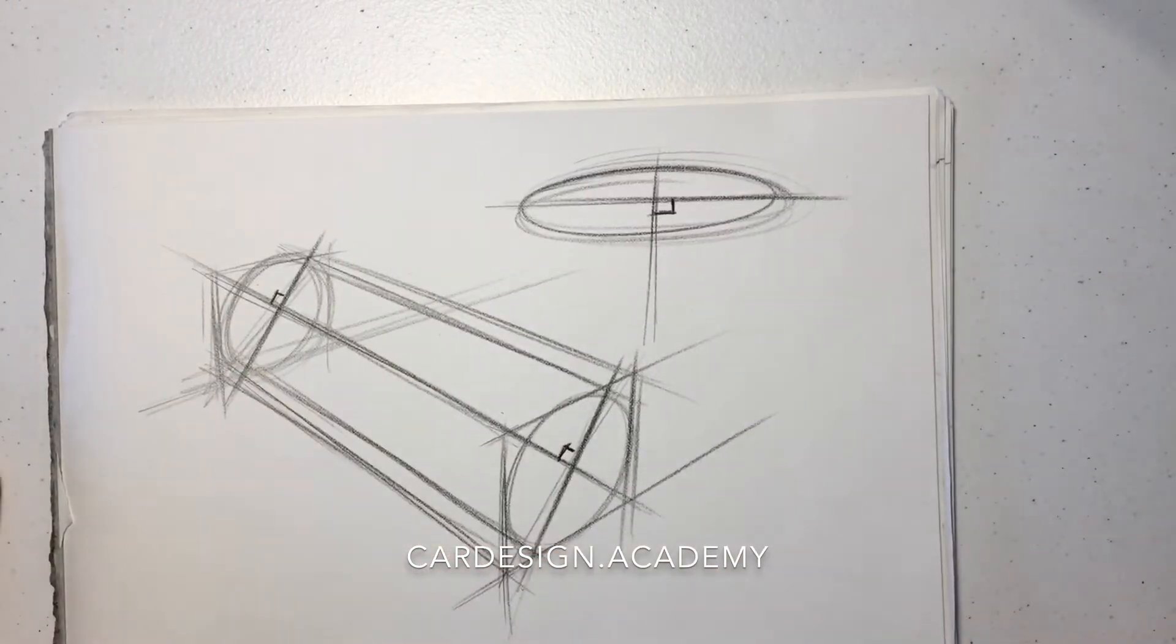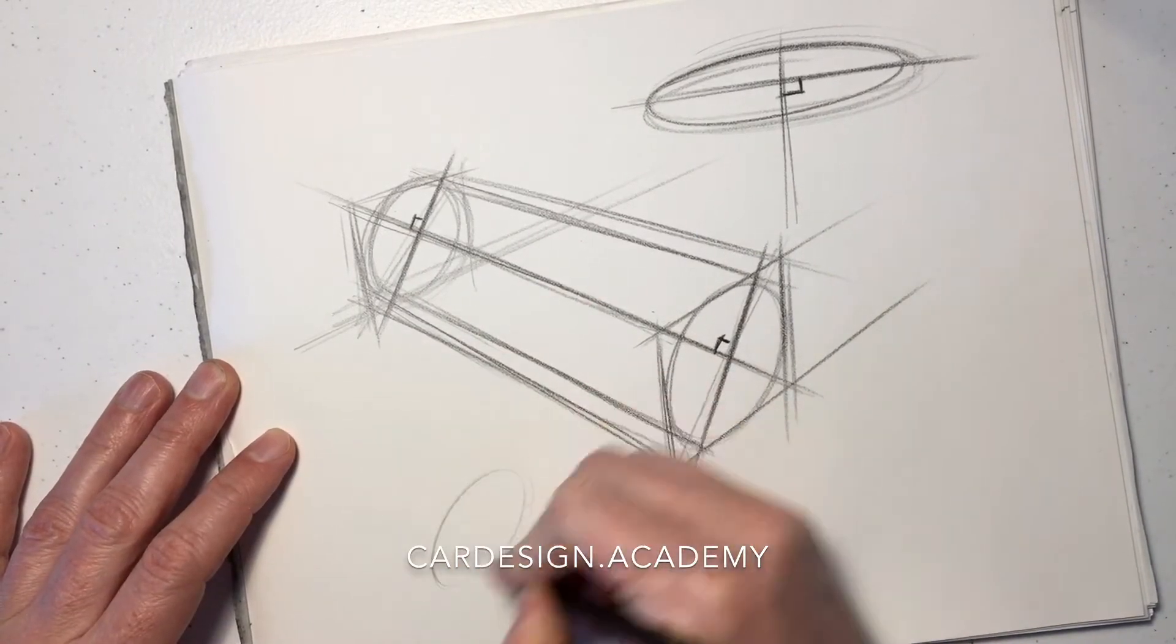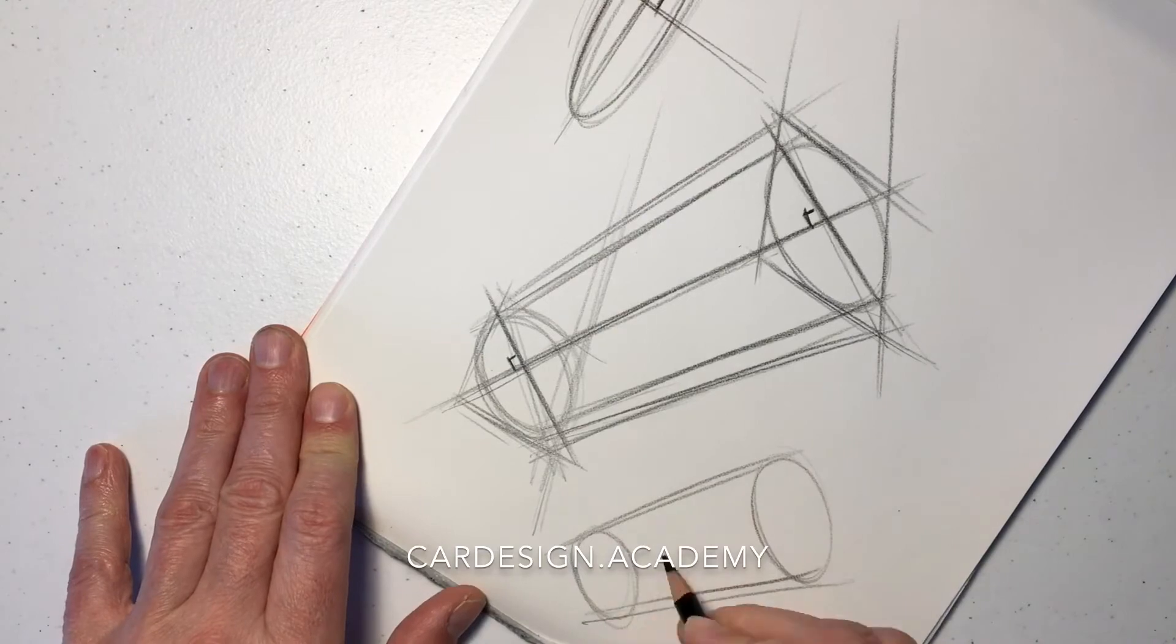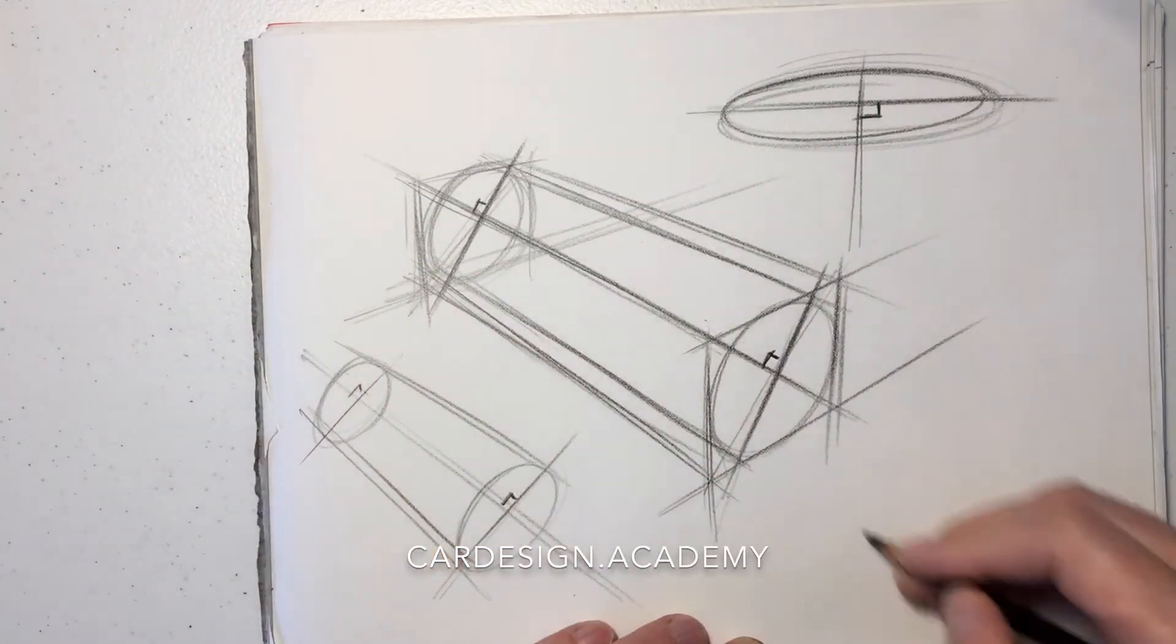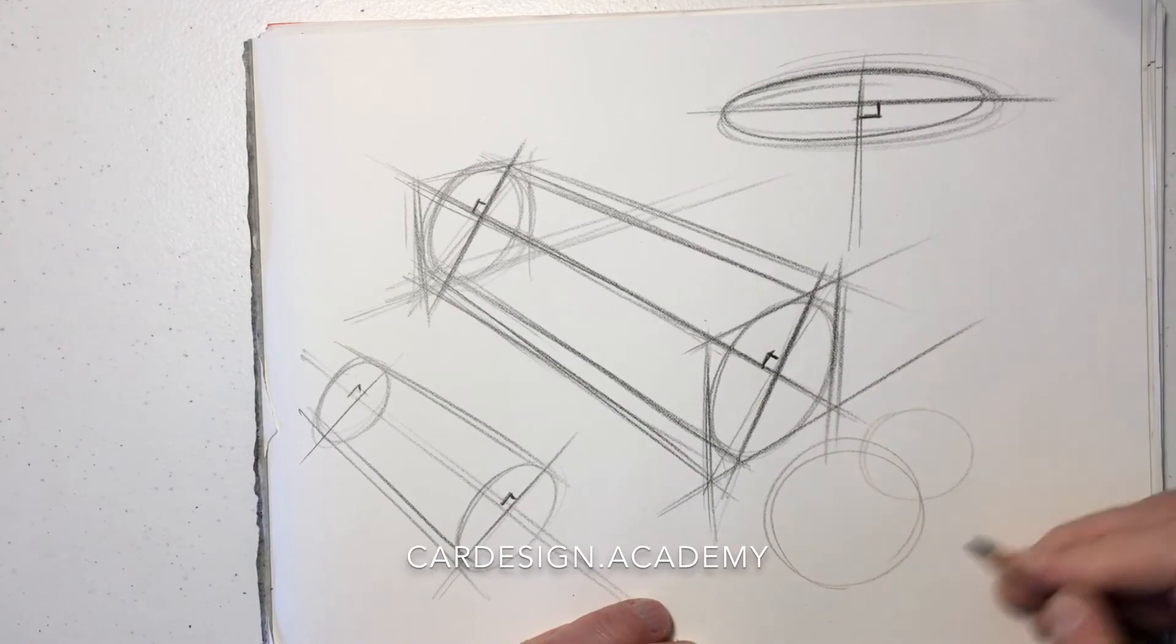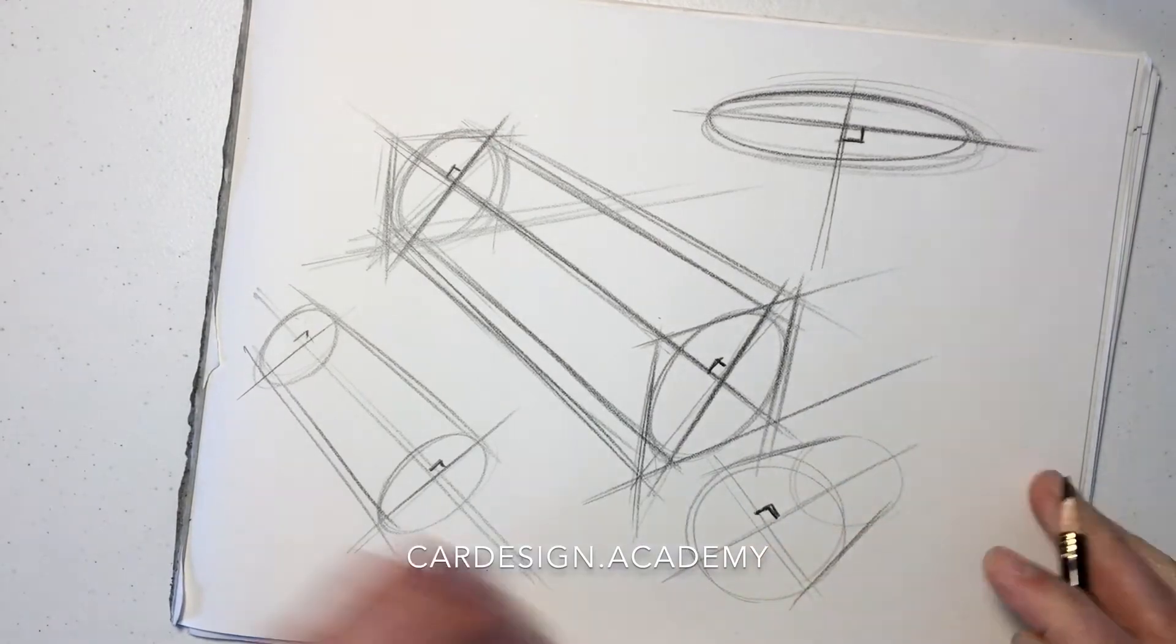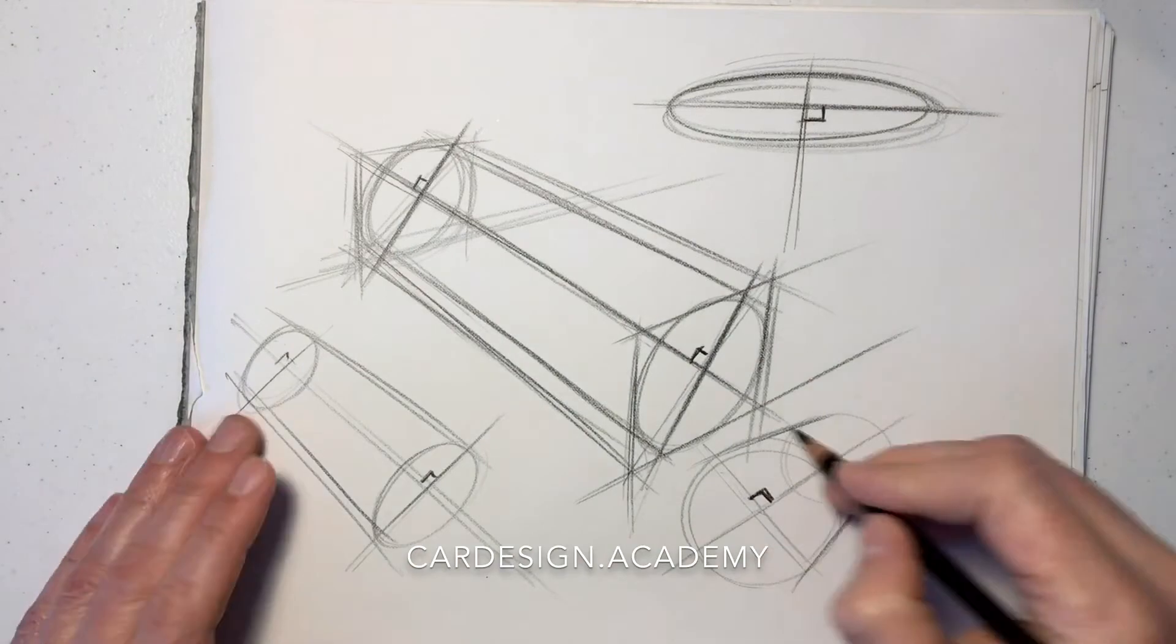So you can imagine what this is. This could be a set of wheels on either side of the car. So your assignment is to practice drawing cylinders in multiple perspectives, multiple views. Always keeping the top and bottom of those cylinders 90 degrees from the axis.